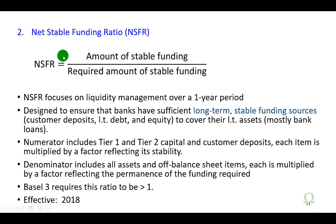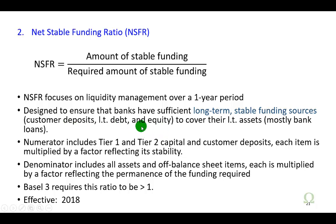The net stable funding ratio, on the other hand, focuses on liquidity management over a slightly longer period — in this case, over a one-year period — and is designed to ensure that banks have sufficient long-term stable funding sources. These long-term stable funding sources include customer deposits, any bank borrowings, and the bank's equity capital that can be used to cover their long-term assets, mostly those loans that banks have. And that's a wrap.